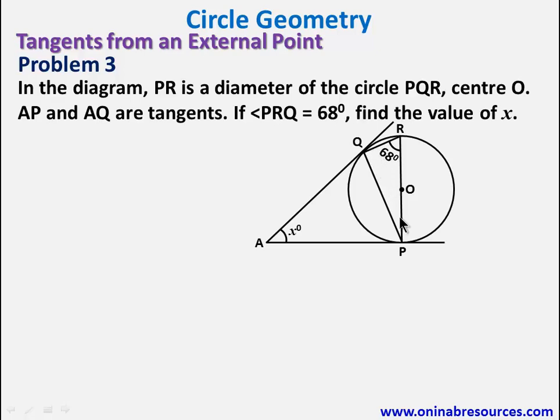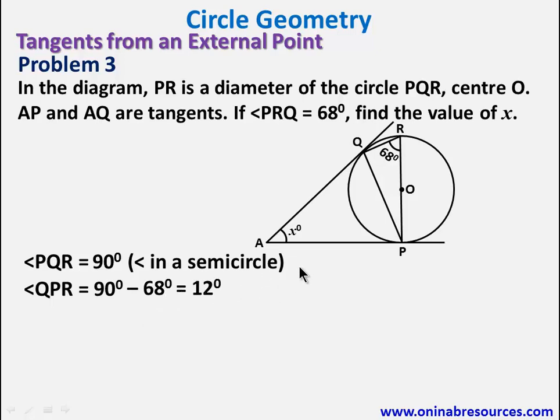That's angle in a semicircle. From there, we'll be able to calculate these. So we start. We say angle PQR is 90 degrees angle in a semicircle. We've established that. So we can calculate this angle QPR, which is 90 minus 68 degrees, 12 degrees. That is sum of angles of a triangle. This is 90. So these and these are complementary angles.